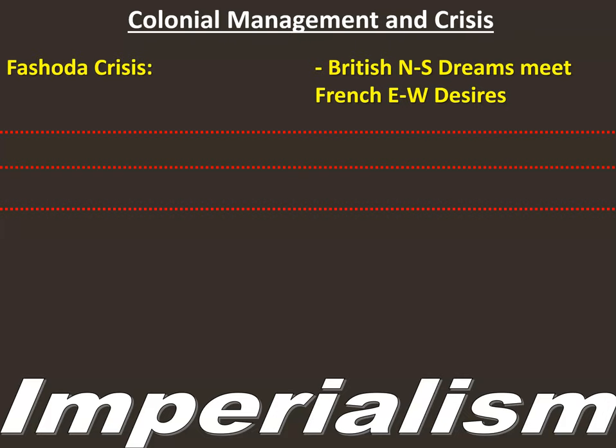The Fashoda Crisis is the first major problem the Europeans run into — what happens when two colonial interests from Western Europe literally run into each other in Africa. Great Britain is trying to go north and south, whereas France is trying to go east and west. A British expedition is marching from the Nile River south into the interior of Africa, while from Lake Chad the French are sending an army expedition east. They meet at Fashoda.